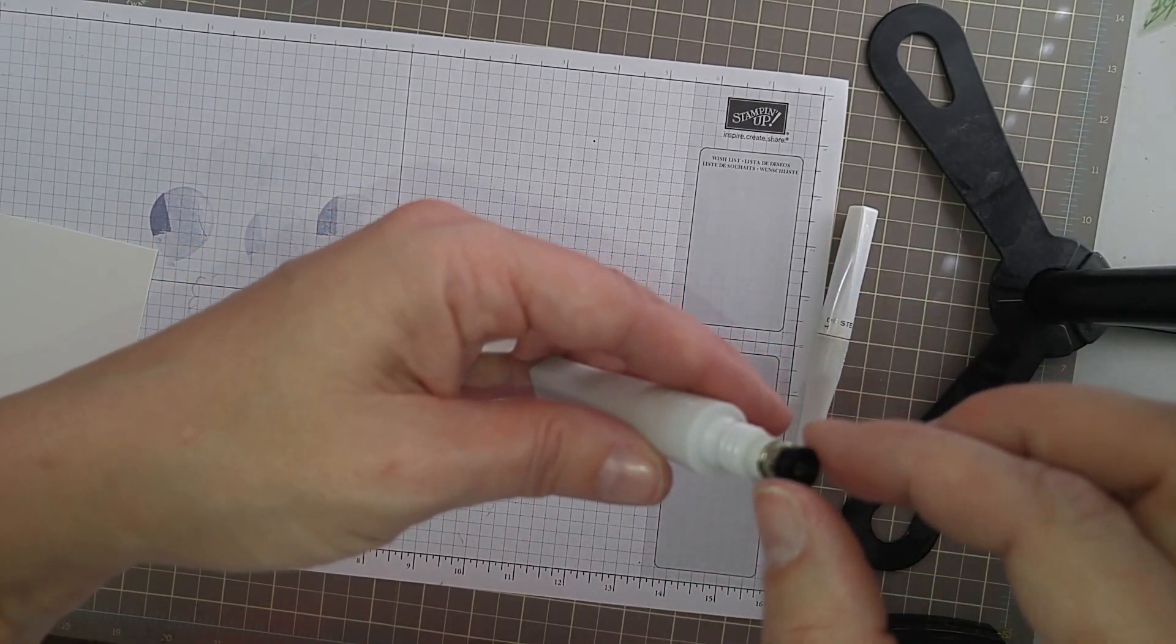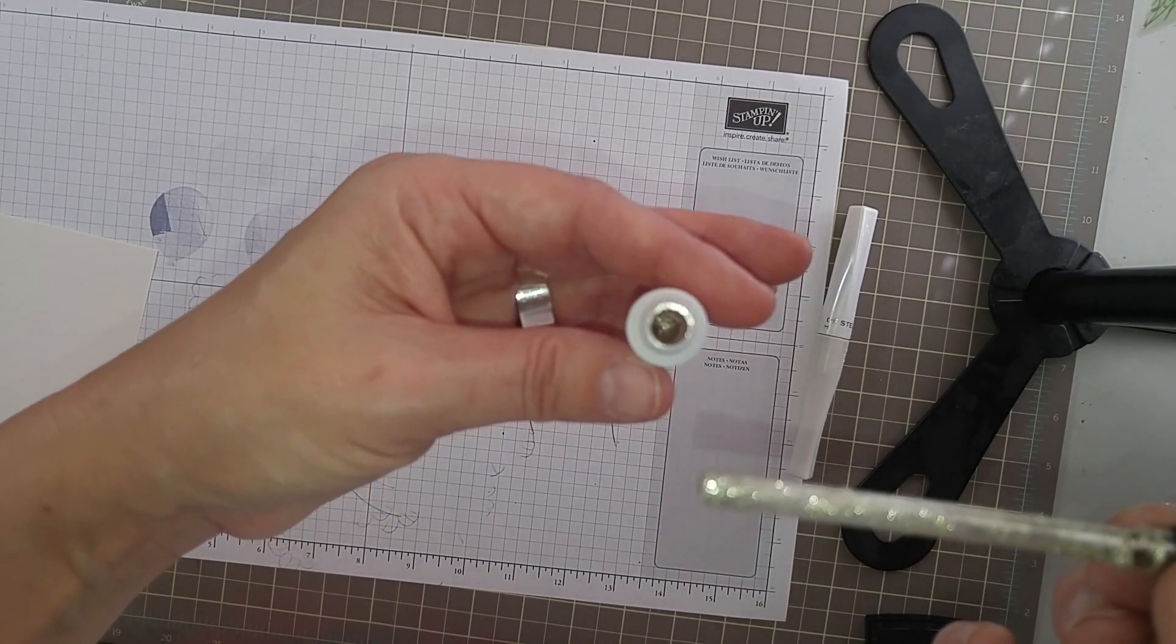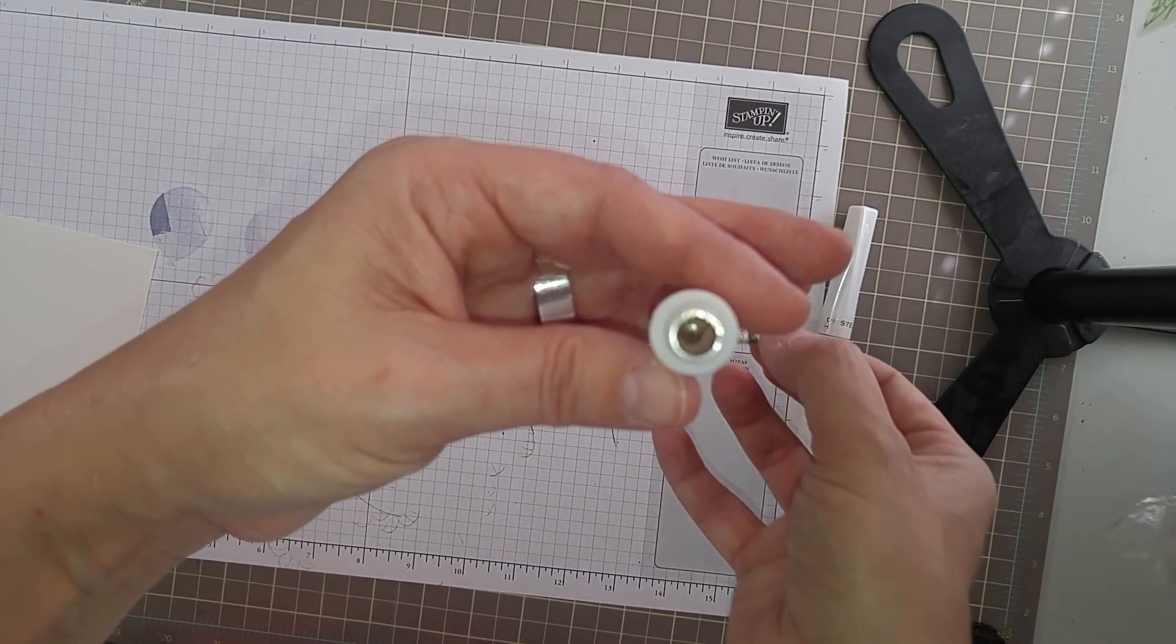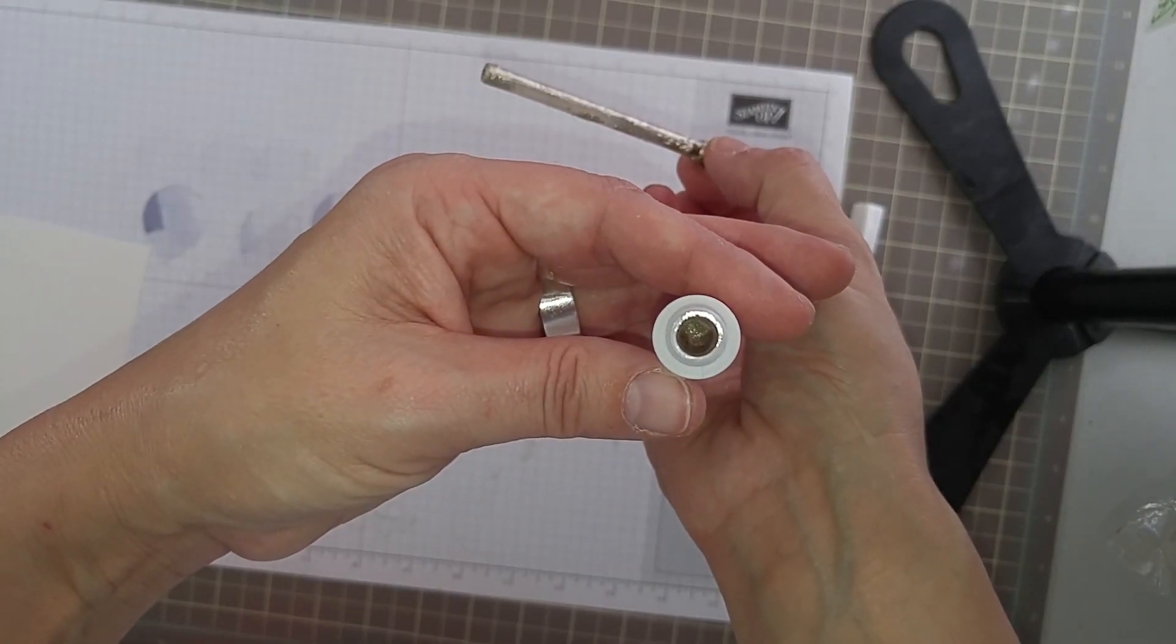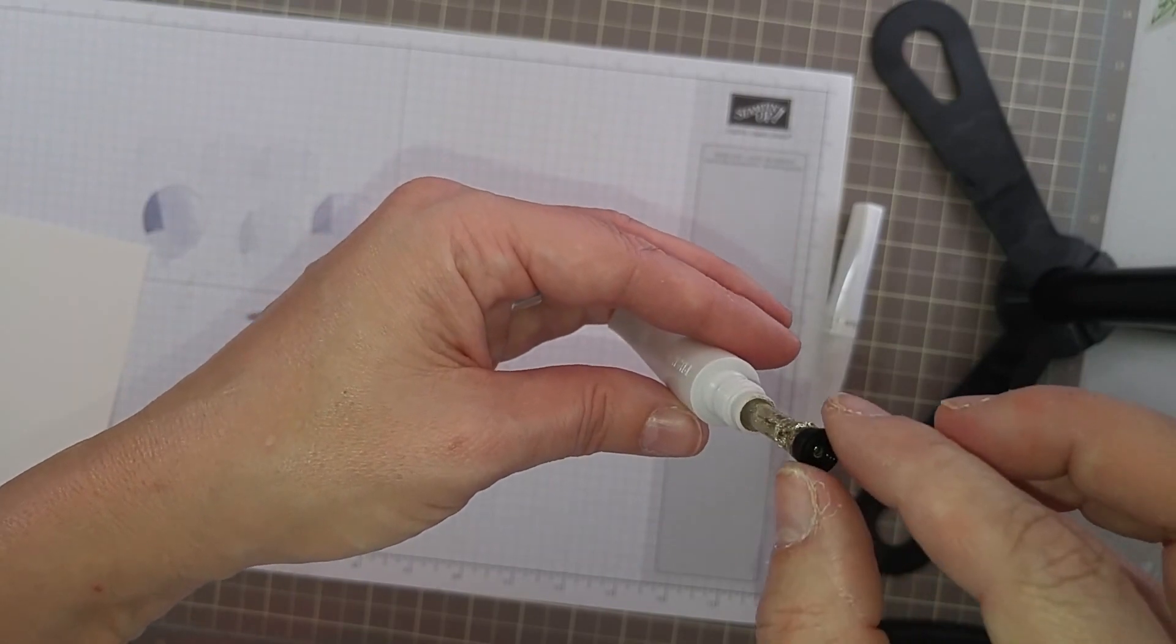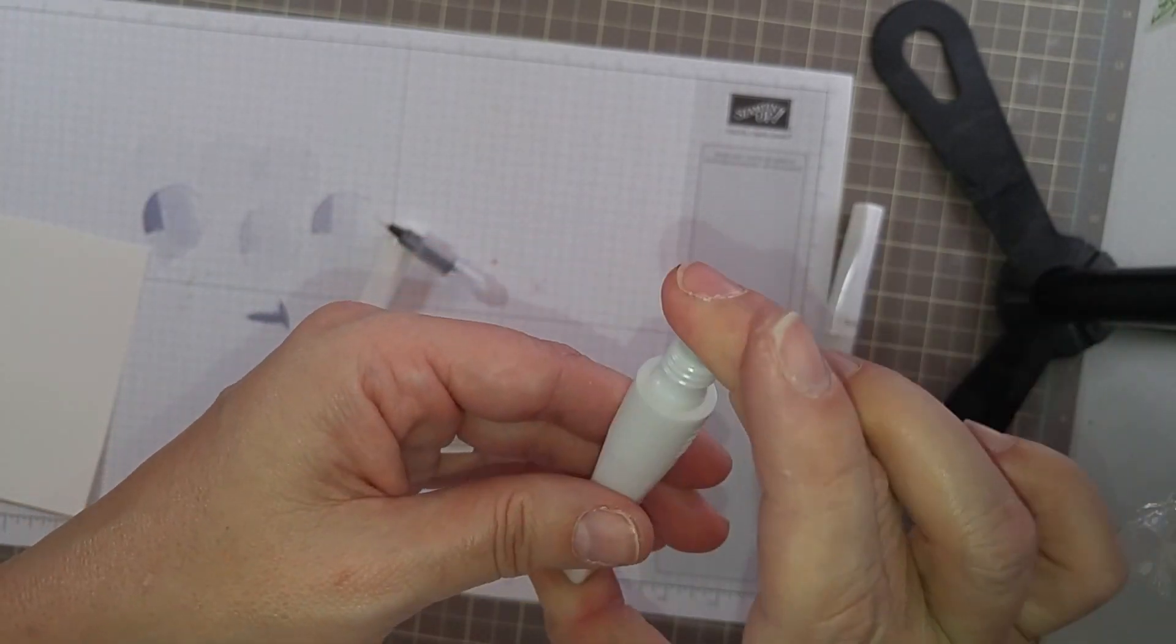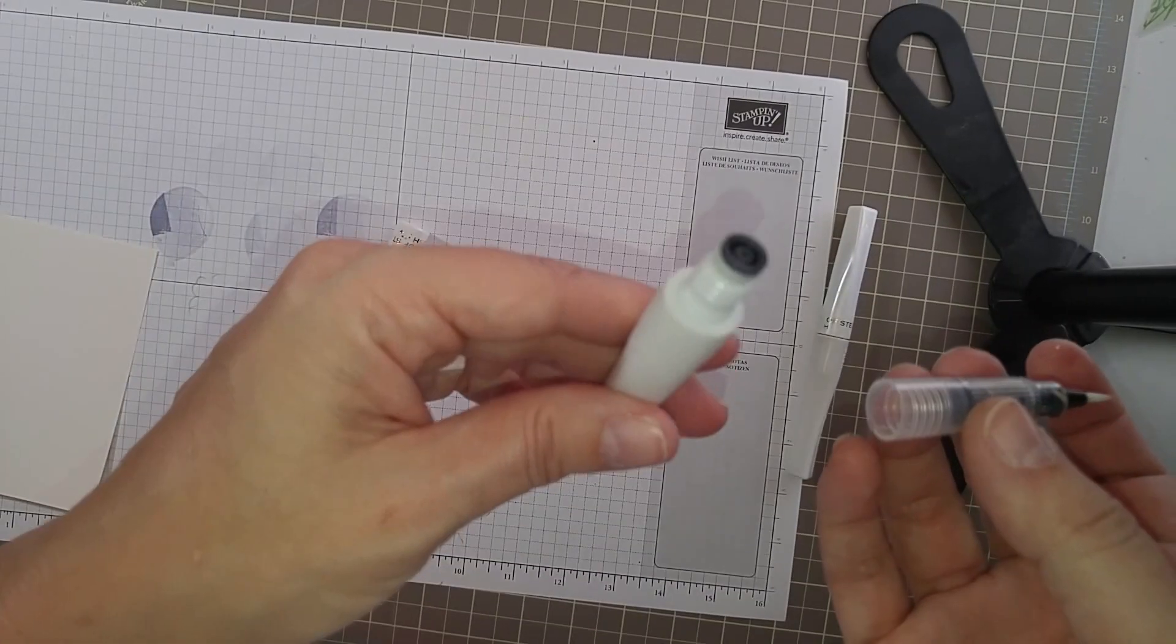So just take it under your sink. Tap water is fine. You can't see it. Look at all that in there. Can you see in there? So add some tap water to it, shake it up, refill it, and stick the black stopper back in.